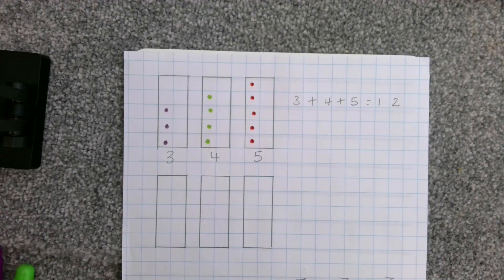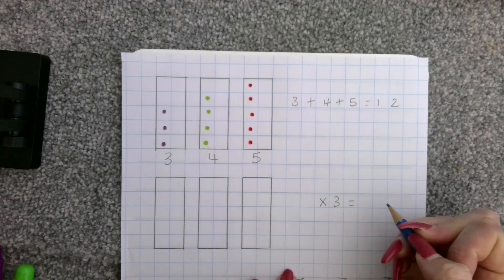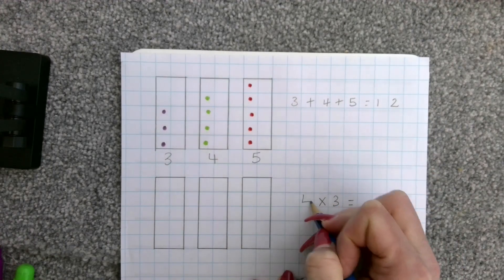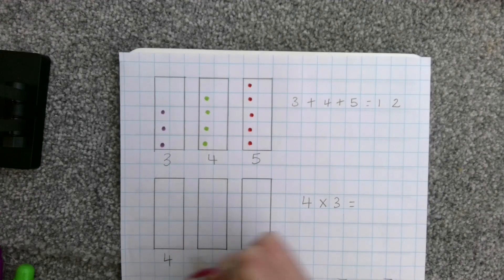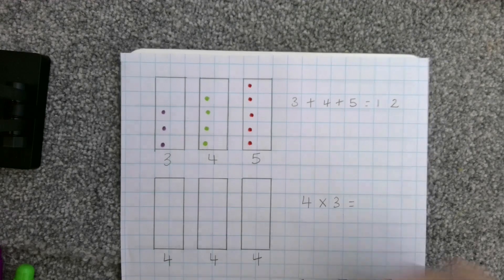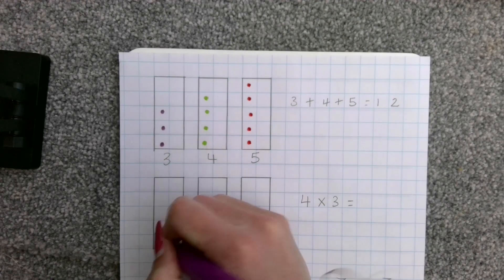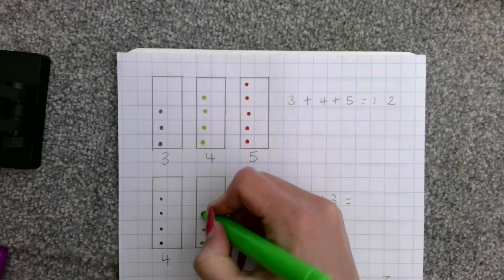Can you remember which number I needed to multiply by three? It was my middle number, which is four. That means that I need four in each box. So, I'm going to draw that out. One, two, three, four. One, two, three, four. One, two, three, four.